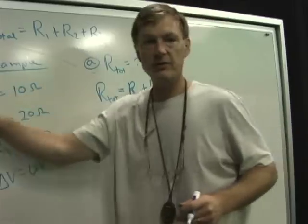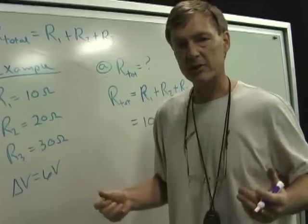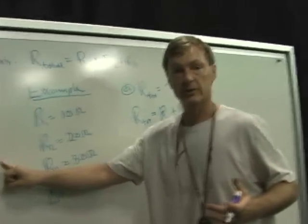10 ohms plus 20 ohms plus 30 ohms is 60 ohms. So it's the same. These three individuals in series, it's the same resistance as if I had one 60 ohm resistor right there.